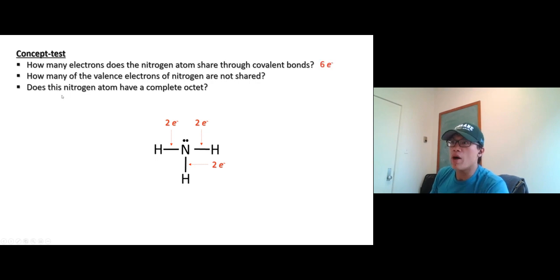Now how many of the valence electron of nitrogen are not shared? How many electrons? Two. You have one lone pair but two electrons. That this nitrogen atom have a complete octet? Well let's count it: one two three four five, that's from the valence electron of nitrogen, and then six seven and eight. Yes, this nitrogen is octet.